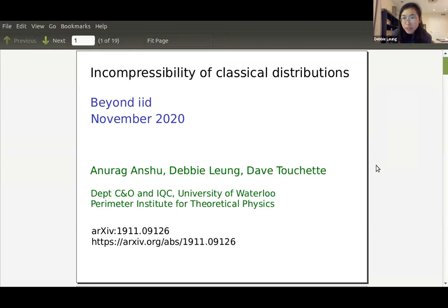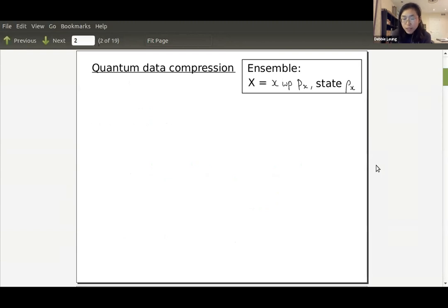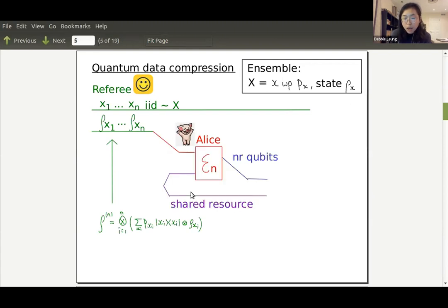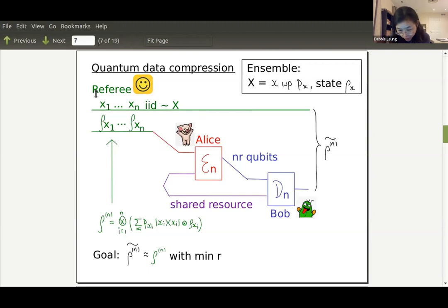This is joint work with Anurag Anshu and Dave Touchette. We frame this as quantum data compression. We draw a classical label X with probability PX, correspondingly a quantum state on d dimensions is prepared. The referee does this n times IID resulting in a big joint state, then gives the quantum system to Alice, who may share resources with Bob.